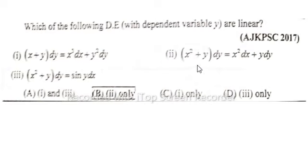So, option B, that is x square plus y into dy is equal to x square dx plus y dy. Option B is correct, so which is linear.